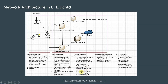The SGW also handles packet routing and forwarding, and transport level packet marking. We talked about accounting for inter-operator charging — in a roaming scenario, if you have roamers in your network, billing can be done at the SGW. Accounting for your own subscribers can also be done here.